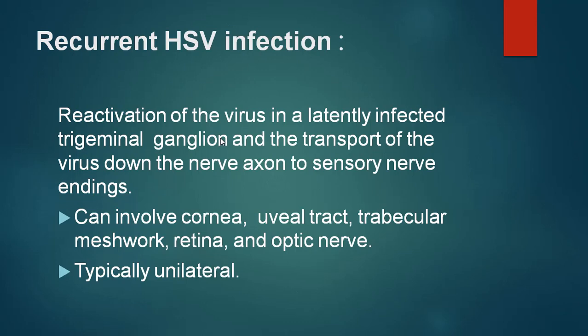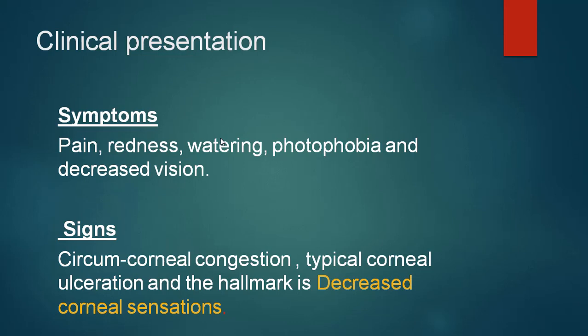Recurrent herpes virus infection is because of reactivation of the virus in the trigeminal ganglion, which moves down to the sensory nerve endings. Once it comes down, it can involve the cornea, uveal tract, trabecular meshwork, retina and even the optic nerve. It is typically unilateral. The clinical presentation includes symptoms of pain, redness, watering, photophobia and decreased vision. Signs include circumcorneal congestion, typical corneal ulceration, and the hallmark in the diagnosis of herpes infection is decreased corneal sensations.